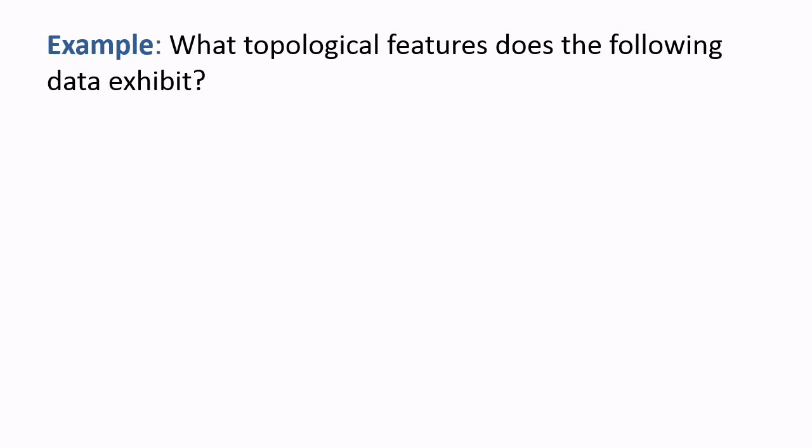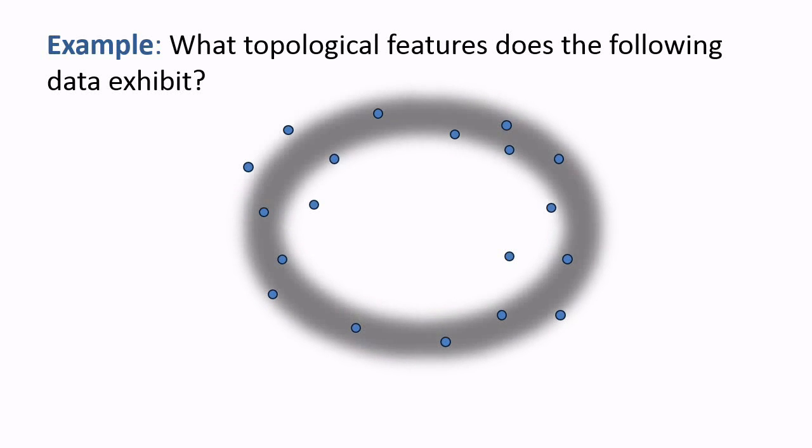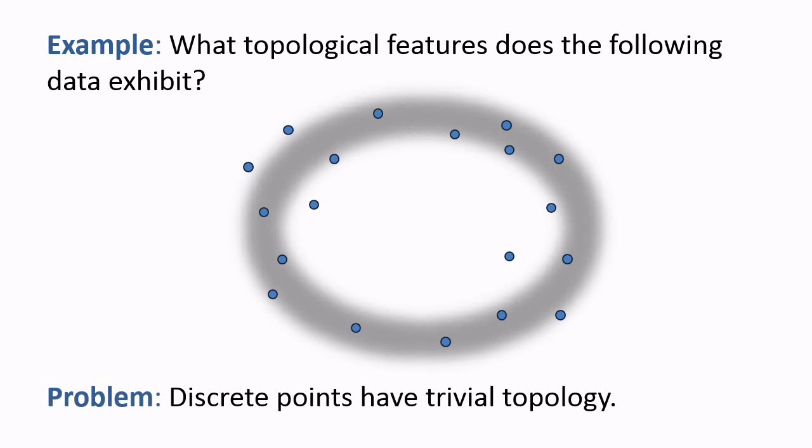For example, consider the following point cloud, consisting of 19 points in a plane. What topological features does the data exhibit? It appears that these points were roughly sampled from an annulus. But how can we detect the annulus from the points alone? The problem is that discrete points have trivial topology.